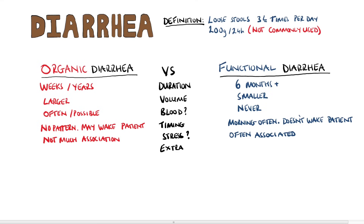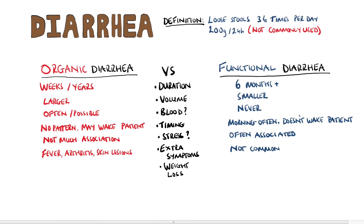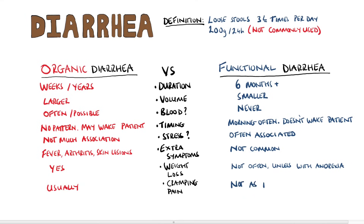Extra symptoms like fever, arthritis, and skin lesions are often seen in organic causes, but not commonly seen in functional causes. Organic usually has weight loss, while functional only has it alongside anorexia. Cramping pain is usually present in an organic cause, but not as frequently seen in a functional cause, although it is there often.